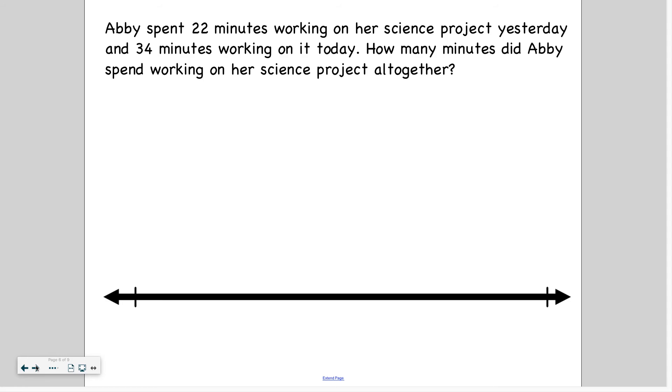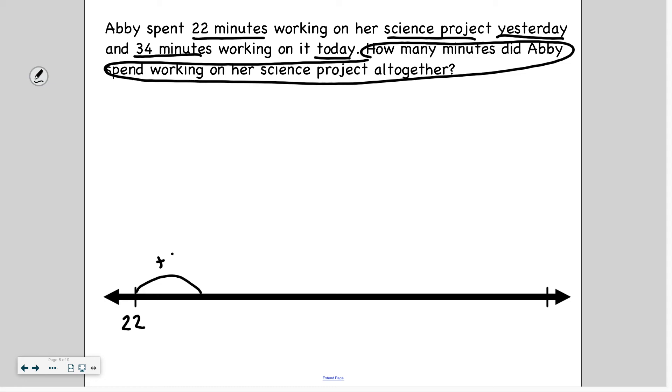All right, so I'm going to solve this one and you should be watching. Abby spent 22 minutes working on her science project yesterday and 34 minutes working on it today. How many minutes did Abby spend working on her science project all together? So I know she spent 22 minutes already. So I'm going to label this 22. And I want to add another 34 minutes to see how much time it is all together. So instead of just adding 34, I'm going to add intervals or increments. So I can do plus eight.